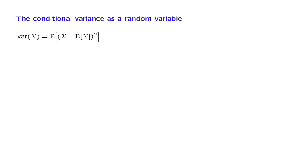Let us start with the definition of the variance. We look at the deviation of the random variable from its mean, square it, and take the average of that quantity.